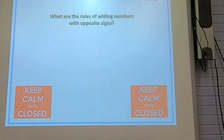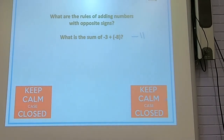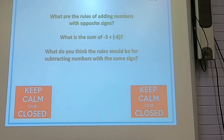So the rules of adding numbers with opposite signs: when they have opposite signs, you subtract and keep the sign of the bigger number. For example, negative 3 plus negative 8 — same sign, so you add: 8 plus 3 is 11, keep the sign, so negative 11. What do you think the rules would be for subtracting numbers? Don't worry too much — that's going to be the next lesson. Look up videos if you need more help — it's a lot for one lesson, and we'll start lesson 5 next.